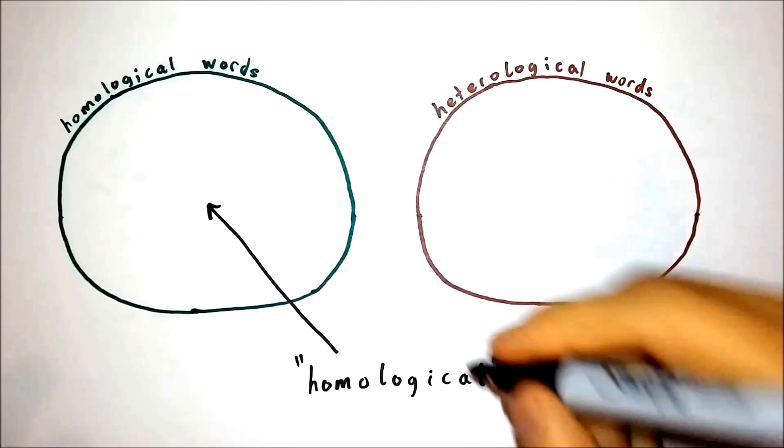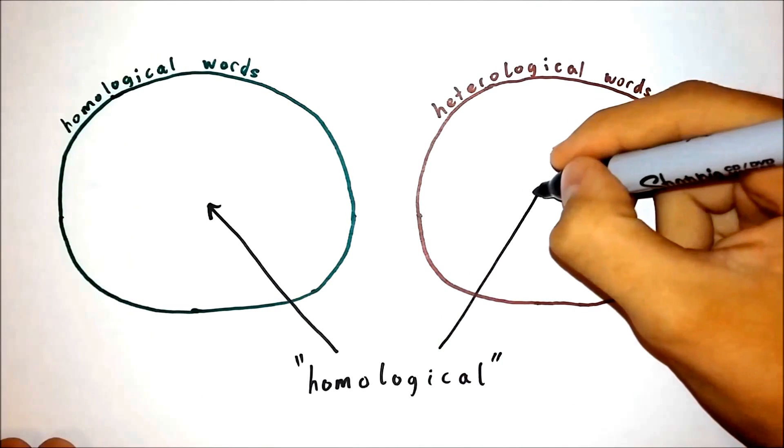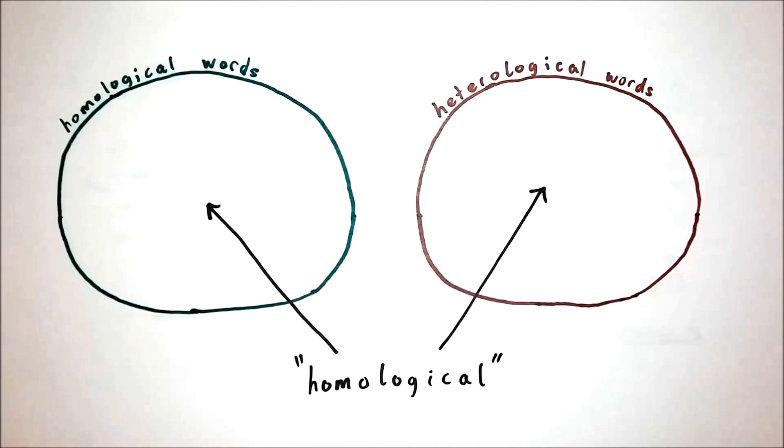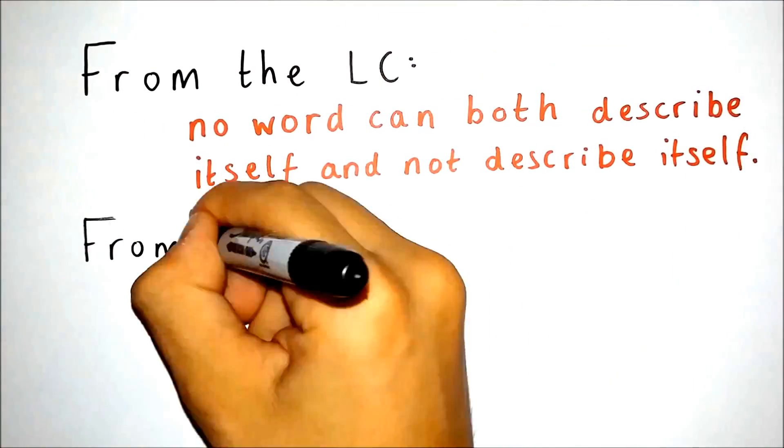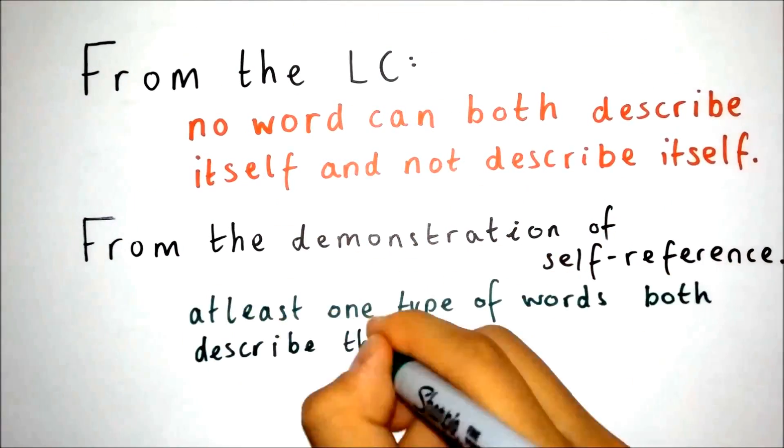But if we then asserted that the word homological is heterological, that it does not describe itself, then it does not describe itself. It seems we are able to categorize the word homological as both homological and heterological without contradiction. But this contradicts the law of contradiction, which states that nothing can both be and not be.